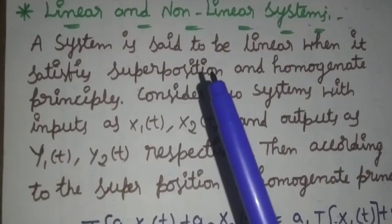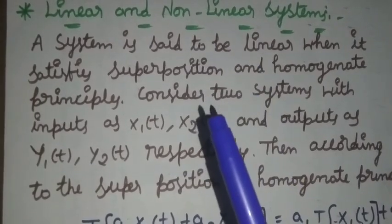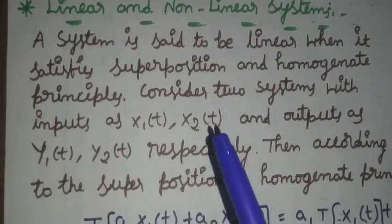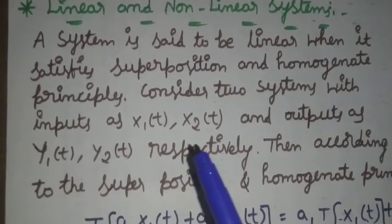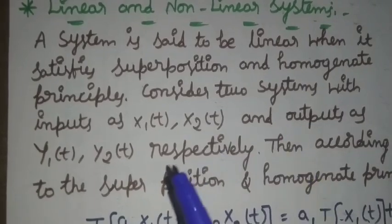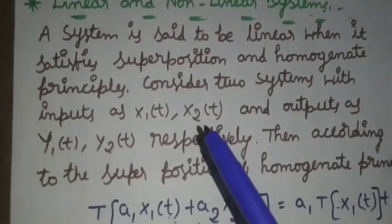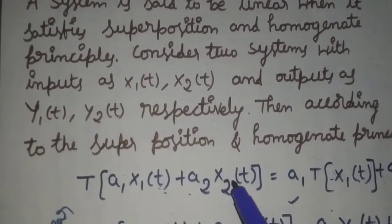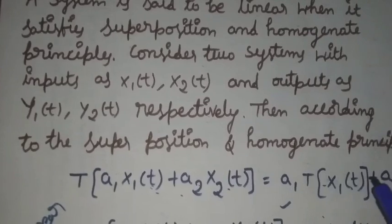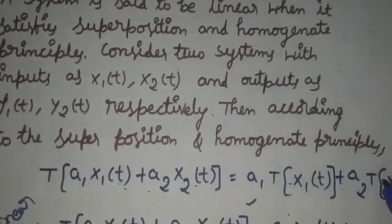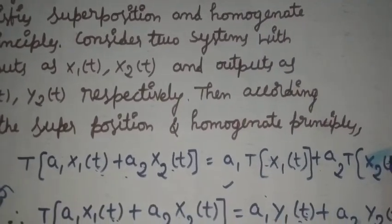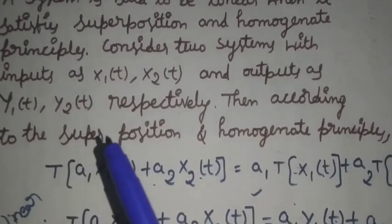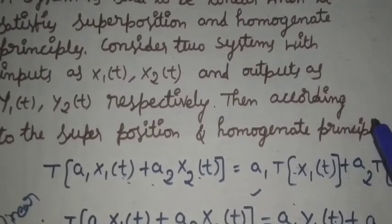Otherwise, the system is said to be non-linear. Consider two systems with inputs x1(t) and x2(t), and outputs y1(t) and y2(t) respectively. Then, according to the superposition and homogeneity principle, the condition is: T(a1·x1(t) + a2·x2(t)) = a1·T(x1(t)) + a2·T(x2(t)). This is the condition for a linear system depending upon the superposition and homogeneity principles.